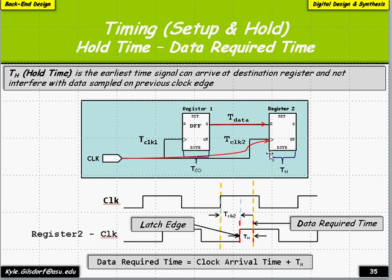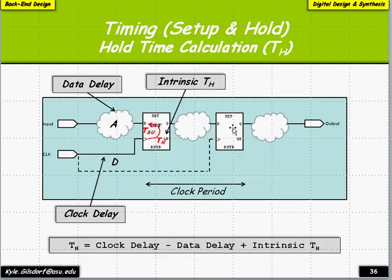The data required time is the clock insertion point plus the skew plus the native intrinsic hold inside the flip-flop. Register one must provide a stable input and hold it until the data required time. Looking at this from a circuit perspective: we have data delay, clock delay, and intrinsic hold. The clock is skewed, meaning it arrives later, which means we have to hold our signal longer. So clock skew, unlike in setup timing, actually causes us problems here.